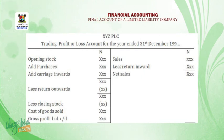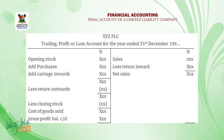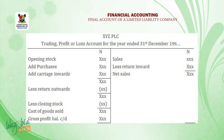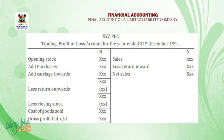On the credit side, we have our sales, less return inward, and we get our net sales. We will now compare our net sales against cost of goods sold. Where net sales is greater than cost of goods sold, we have our gross profit, which is added to cost of goods sold on the debit side to get a total. The net sales is extended downward to get a total too.